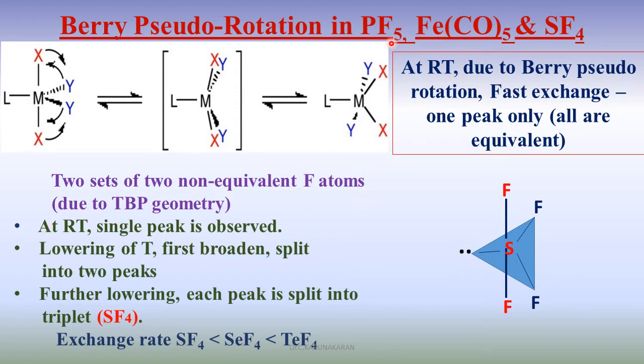For example, PF5, fluorine-19 NMR is used to study the pseudo-rotation. In this case, carbon-13 NMR is used to study the flexural character of this molecule. Fluorine-19 NMR is again used here.